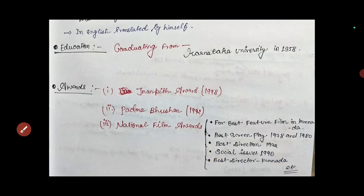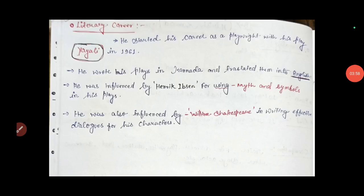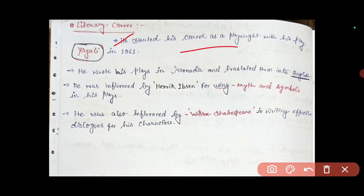Now let's see his literary career. Girish Karnad started his career as a playwright with his play Yayati in 1961. This was a historical play. He wrote his plays in Kannada and translated them into English himself.